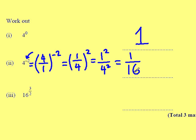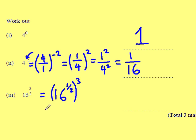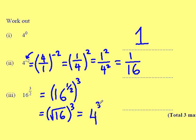16 to the power of 3 over 2: split it into two components. That's 16 to the power of 1 half, all cubed, because a half times 3 is 3 over 2. 16 to the power of 1 half just means the square root of 16, all cubed. The square root of 16 is 4, and when I cube that number, I end up with 64.